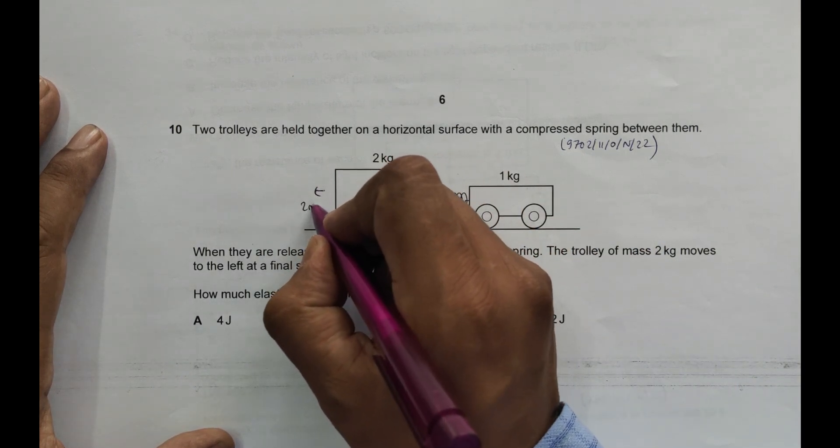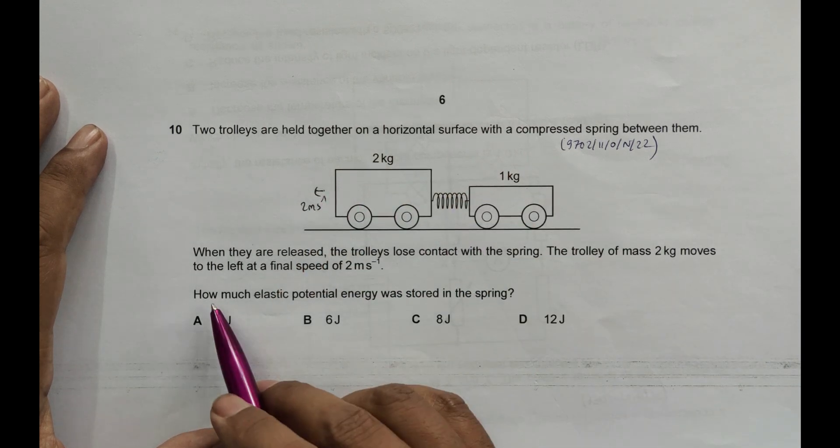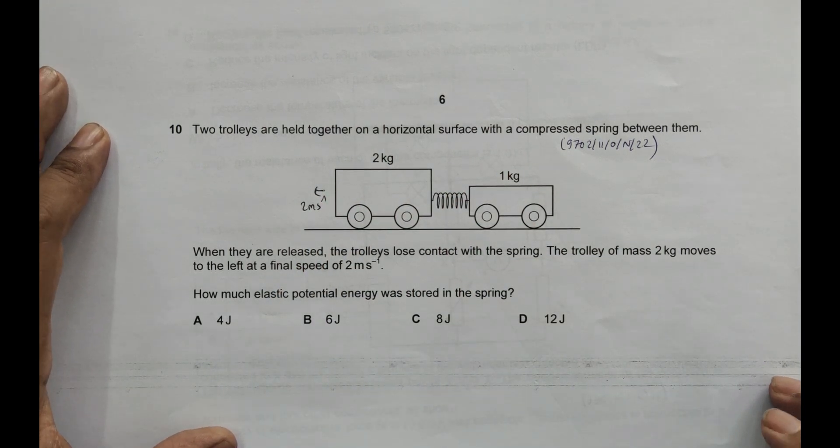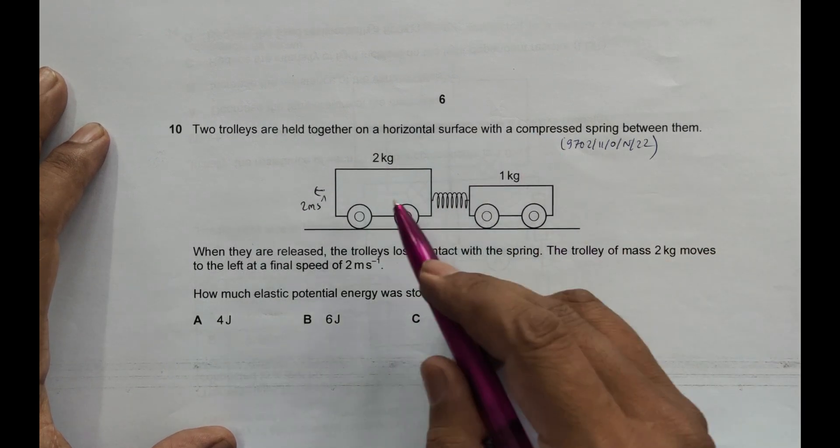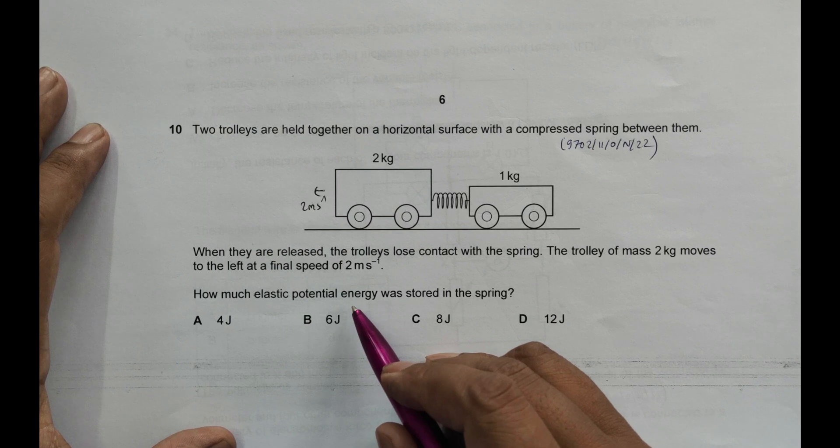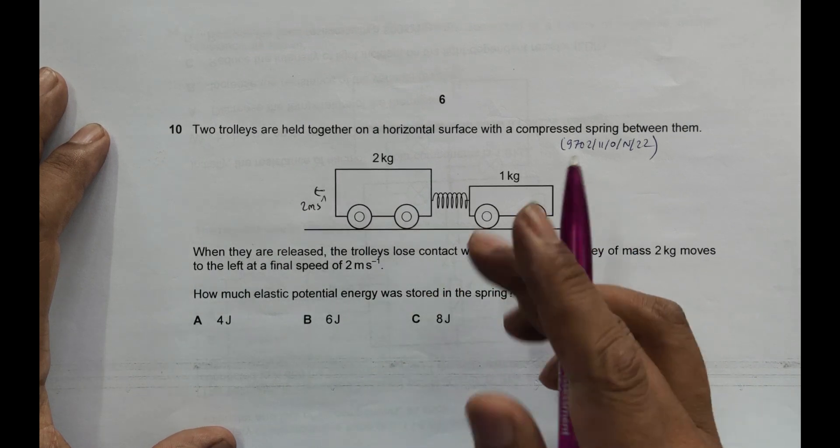How much elastic potential energy was stored in the spring? What we must have is the KE of the whole system will be equal to the potential energy. So if I find the KE of the whole system after release, we can find this.